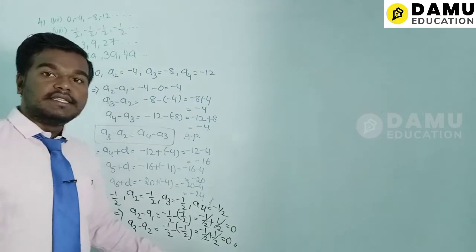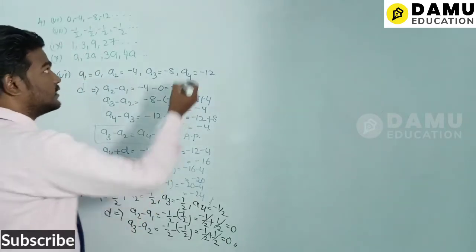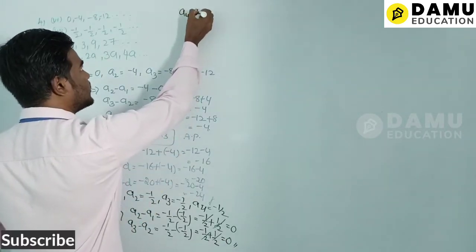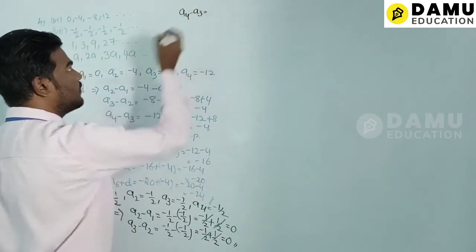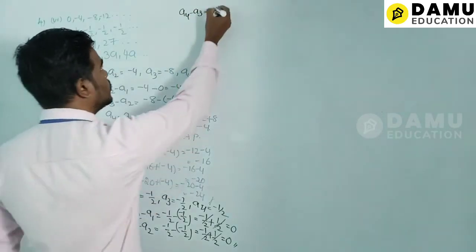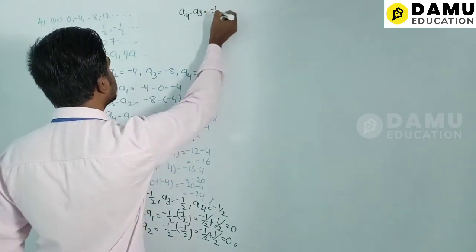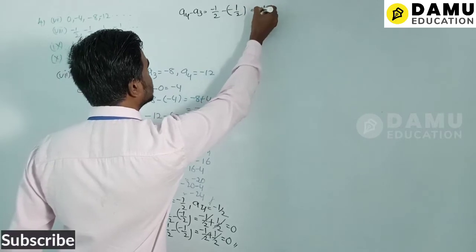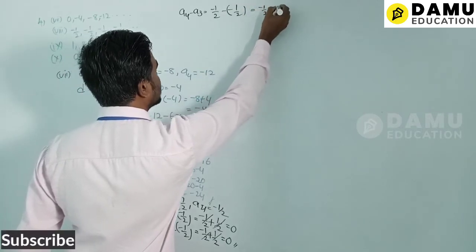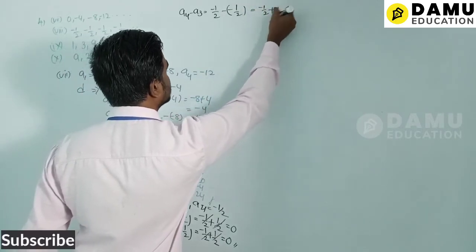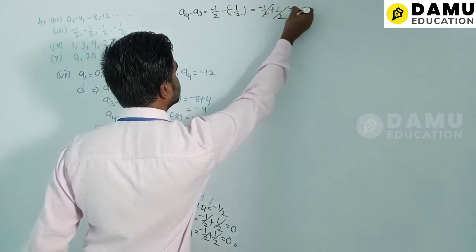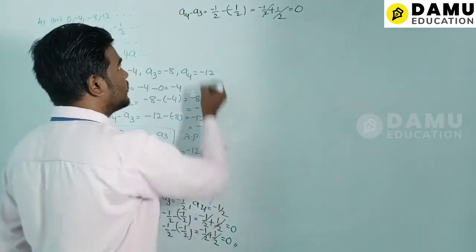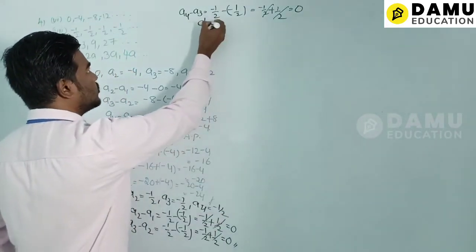And a4 − a3 = −1/2 − (−1/2) = −1/2 + 1/2 = 0. The common difference is 0, so the series is in AP.